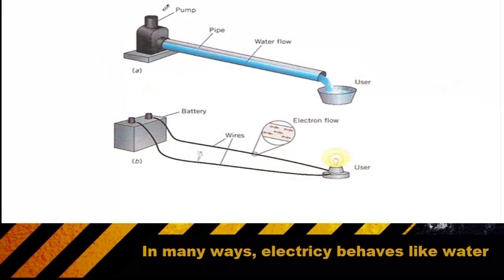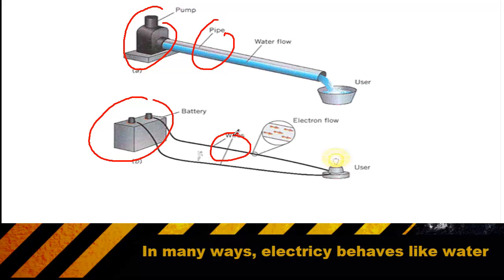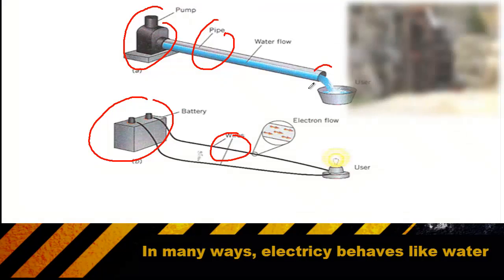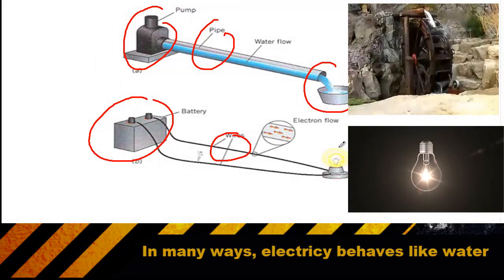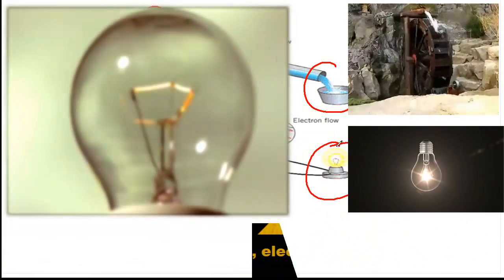As water flows through a pipe, you have a pump that's similar to a battery. The water flows through a pipe just like electricity flows through wires. You also have some task or objective the water is trying to accomplish, like moving a water wheel or filling a cup. In an electrical circuit, that job is often something as simple as lighting a light bulb.